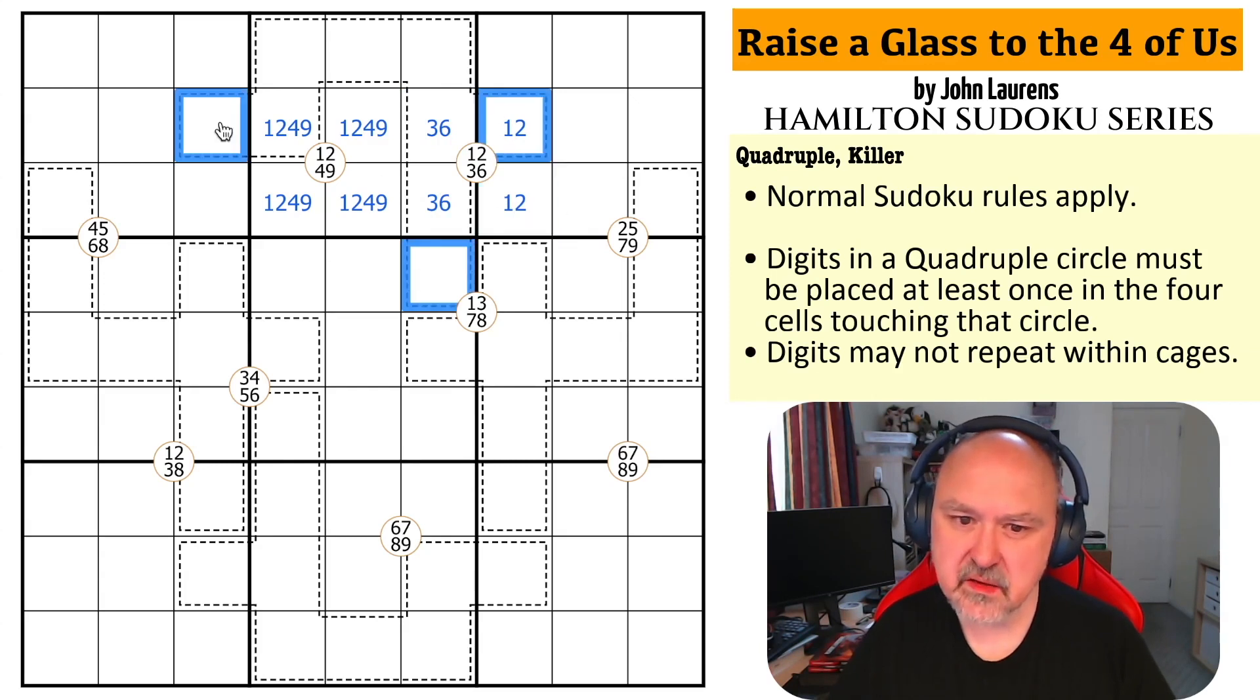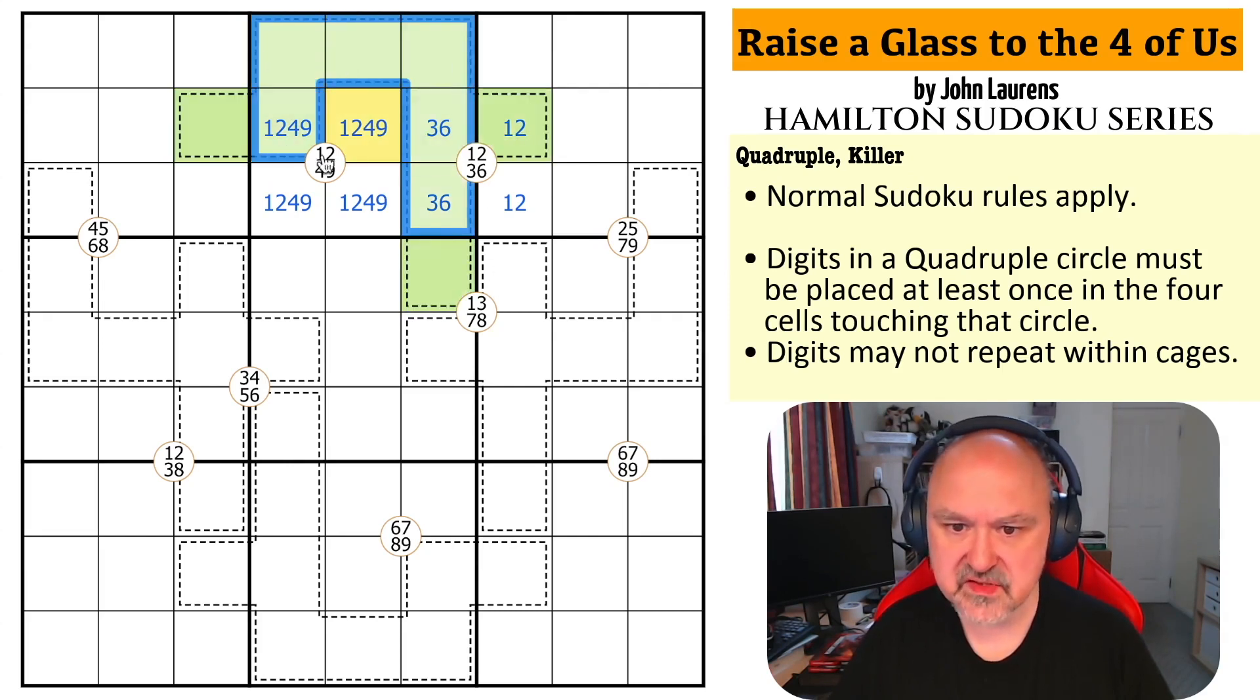Now, there's a weird trick happening here. Where does this cell go in this cage? This is a nine cell cage. Where does that cell there go in this cage? Because, it can't be any of those cells because they're in the same box. And, it can't be those cells because they're in the same row.